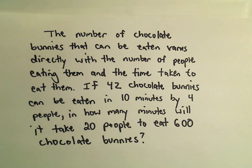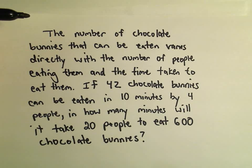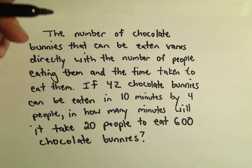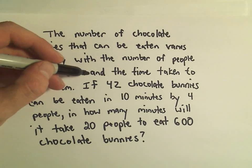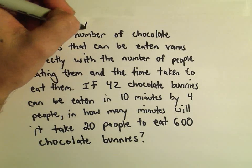The way that we're going to write this, so this is already a little different because things are varying directly with two conditions, the number of people and time. So the number of bunnies, I'm going to abbreviate that as N.